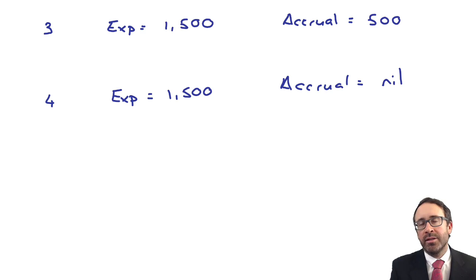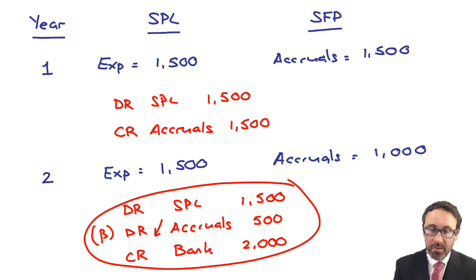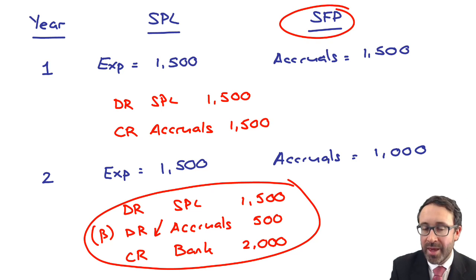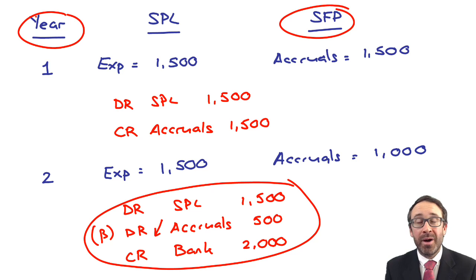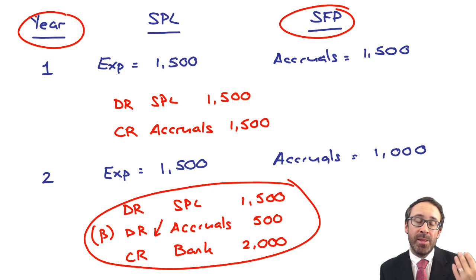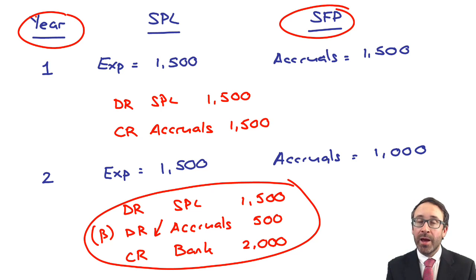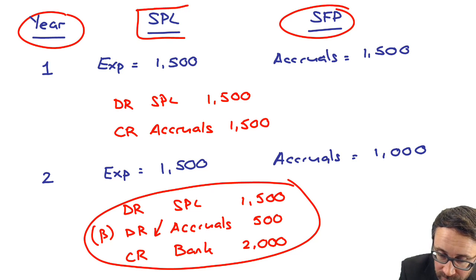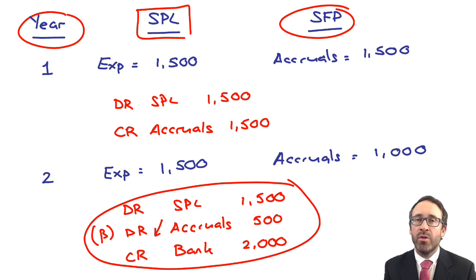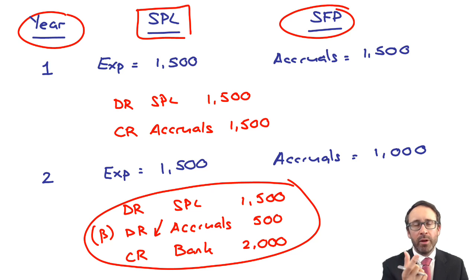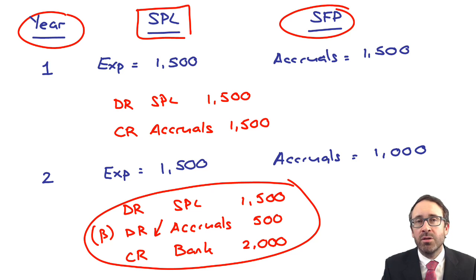In the exam, if you have a question in CIMA F1 relating to leases and low value or short life assets, be careful: first, get the expense correct — most people can normally do that. But also focus on what's happening on the statement of financial position, and what's happening in the particular year being asked about, because it might not ask you for year one — it could be year two. Also be careful with the statement of profit or loss: if you enter into a lease partway through the year, you'll need to prorate the expenditure on a monthly basis. Those are a couple of tricks the examiners have up their sleeves.